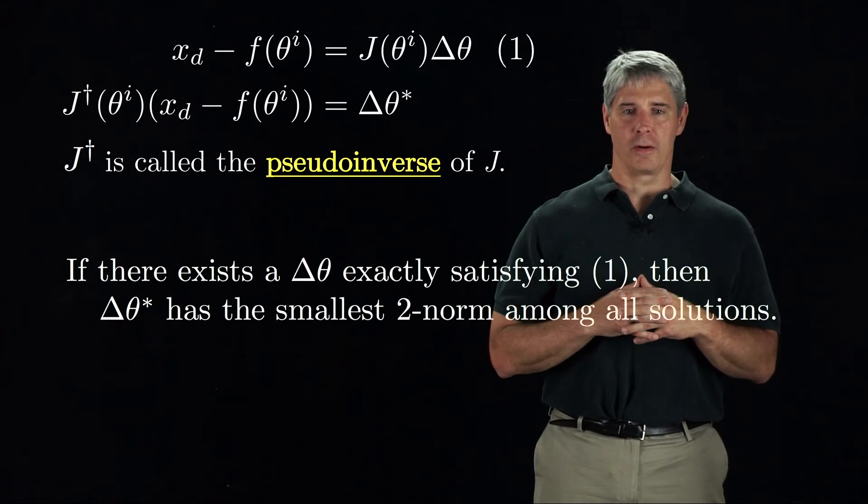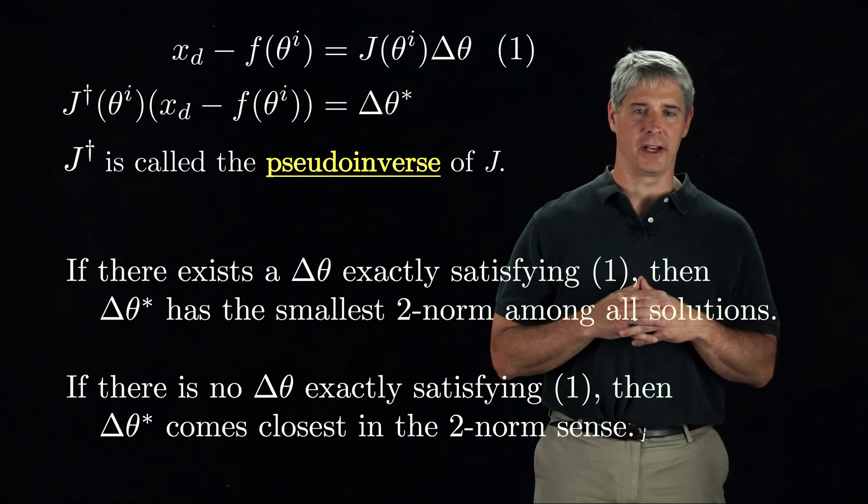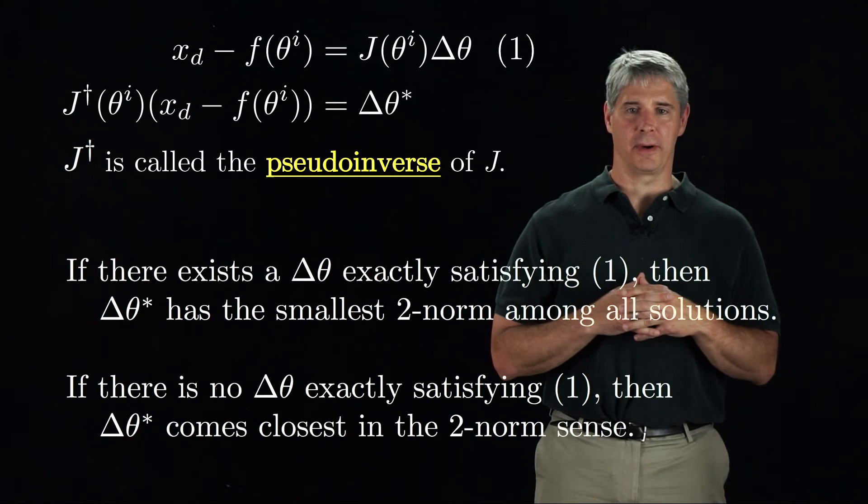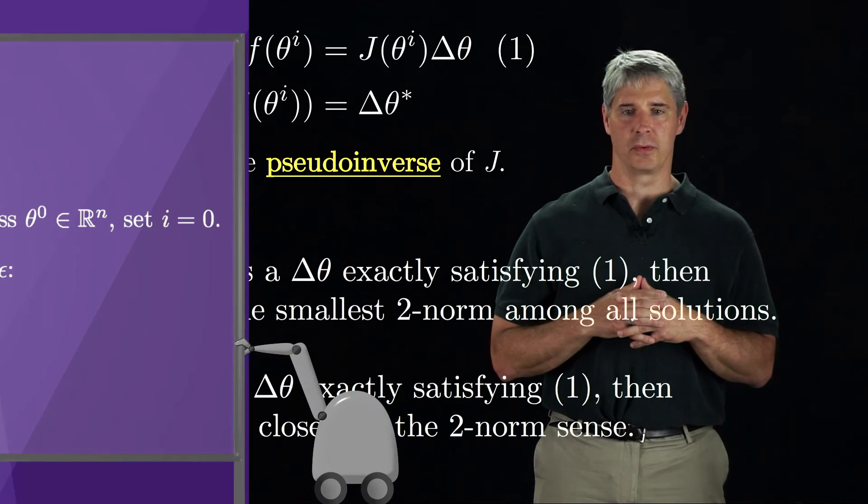On the other hand, if the robot is at a singularity, or if it does not have enough joints to exactly satisfy equation 1, then theta-star calculated by the pseudo-inverse is one that minimizes the error in satisfying equation 1.